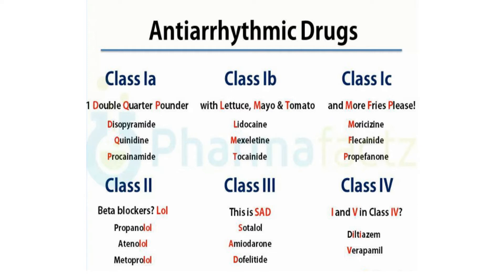Class two is essentially beta blockers. They have anti-sympathetic nervous system activity. You know that all beta blockers end with '-lol,' so they are easier to remember: propranolol, atenolol, metoprolol, esmolol, and all the '-lols.'